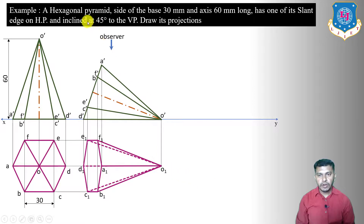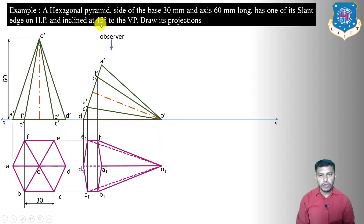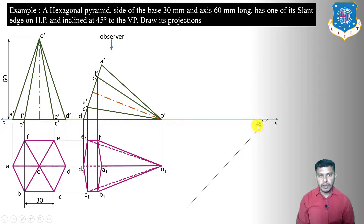For the third stage, we take the condition with the vertical plane. The slant edge on HP must be inclined at 45 degrees to VP. Slant edge OD is on HP, so we incline O1–D1 at 45 degrees to the XY reference line. Draw a line inclined at 45 degrees to the XY reference line to position the slant edge.